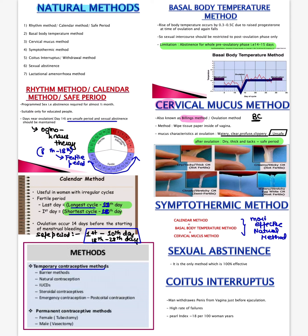Temporary methods include barrier methods, natural methods, intrauterine contraceptives, steroidal contraceptives, and emergency contraceptives. The basal body temperature method: there is a rise in temperature by 0.3 to 0.5 degrees due to progesterone at the time of ovulation. The cervical mucus method is also known as the Billings method — an important MCQ from PSM Parks. Here you look at the consistency of the cervical mucus.